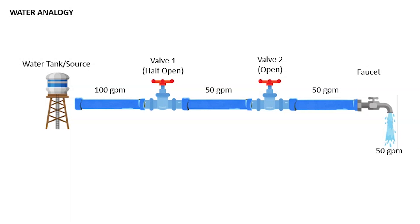With that, let's dive into a few examples. I have an analogy for you as well as some examples that we'll run through. So we're talking about how a modem affects the speed of your network. I love to use this water analogy, and I hope this helps you better understand what exactly we're talking about here, and how the speed of your network is affected by the devices in it.